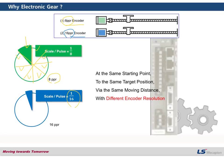What I want to highlight is that at the same starting point, to the same target position — the same moving distance — with different encoder resolutions, the number of pulses required will be different.